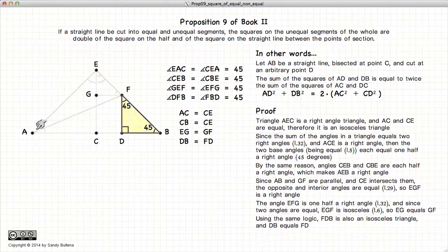So we have all these angles, this is 45 degrees, this one's 45, this one's 45, this one's 45, and so on, and that GF is equal to EG and FD is equal to DB.